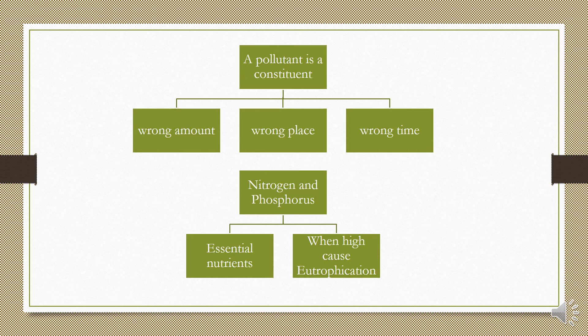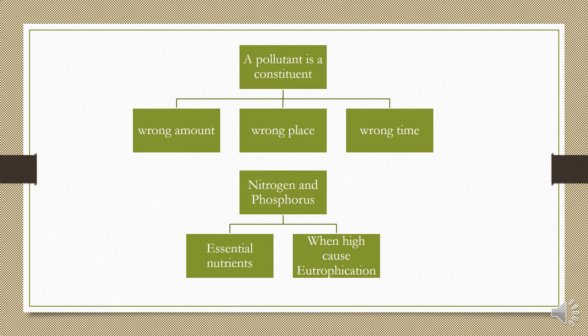When nitrogen and phosphorus are at the wrong place, in the wrong amount, at the wrong time, they cause pollutant effects. They are not pollutants on terrestrial land, but can act as pollutants in water bodies because they cause eutrophication — an increase in the amount of nutrients in water bodies. Eutrophication generates secondary effects including increased biological oxygen demand and algal blooms, which disturb water quality and aquatic life.